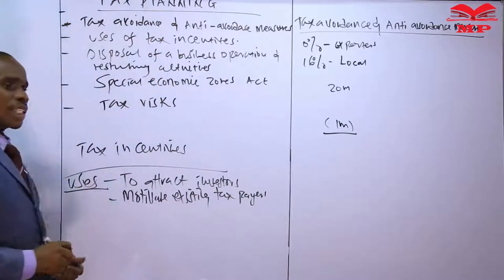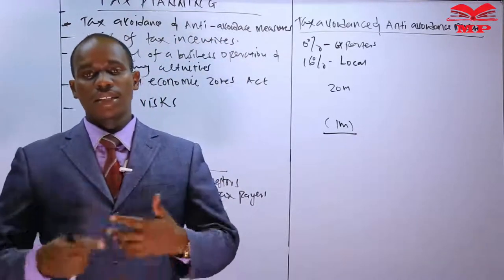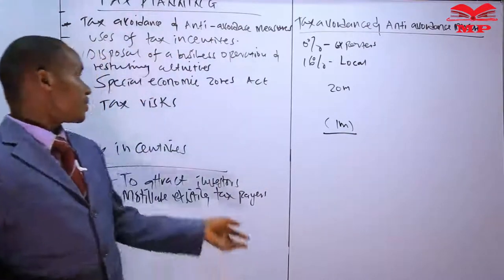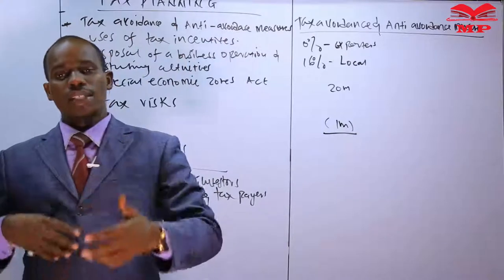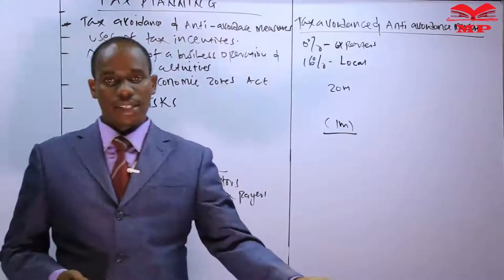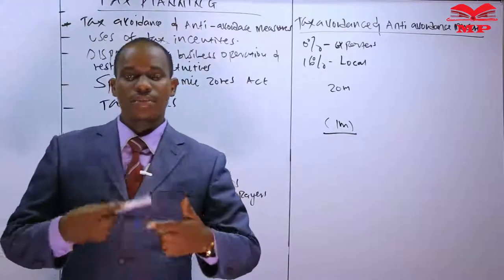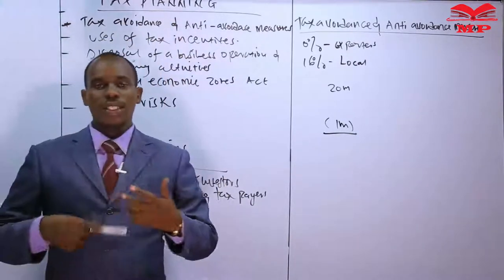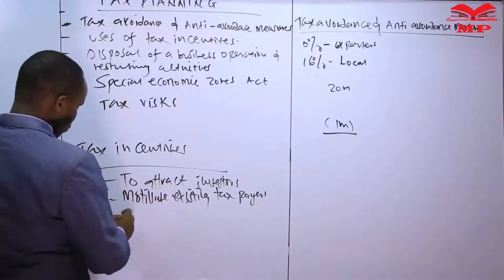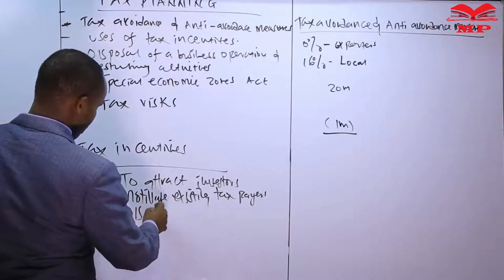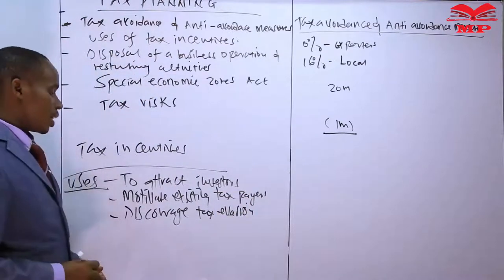In order to motivate existing taxpayers - because paying tax is painful - we use incentives like wear and tear allowance, where somebody is using assets to generate taxable income. If you appreciate the loss of value of that asset, then to some extent that particular taxpayer feels motivated and continues to pay tax. We also give tax incentives in order to discourage tax evasion.